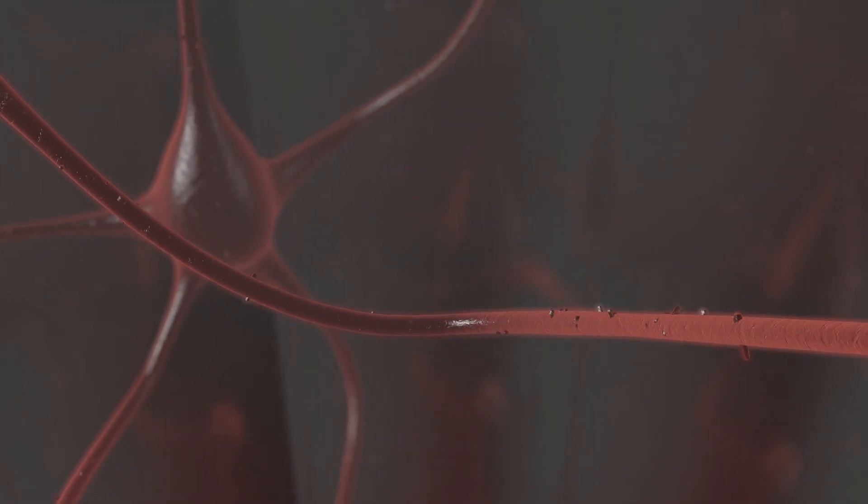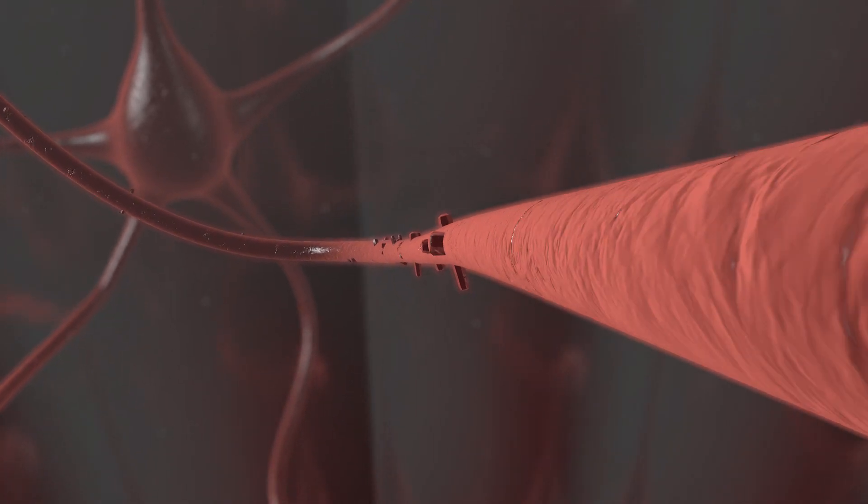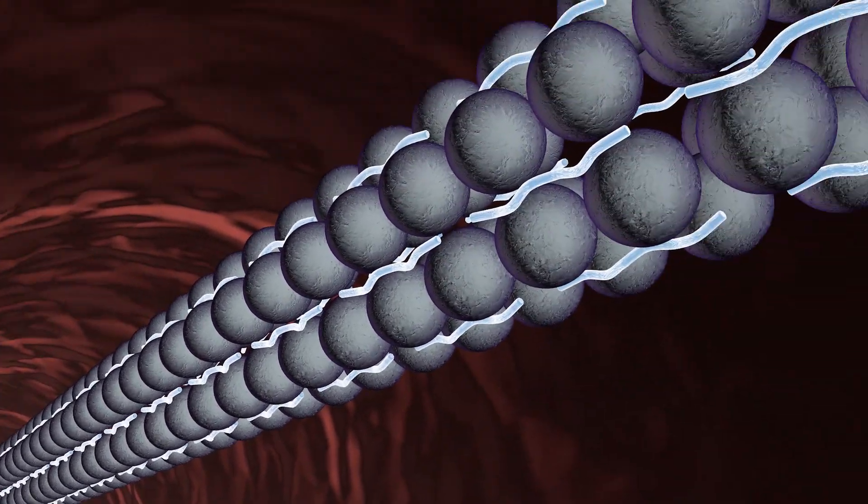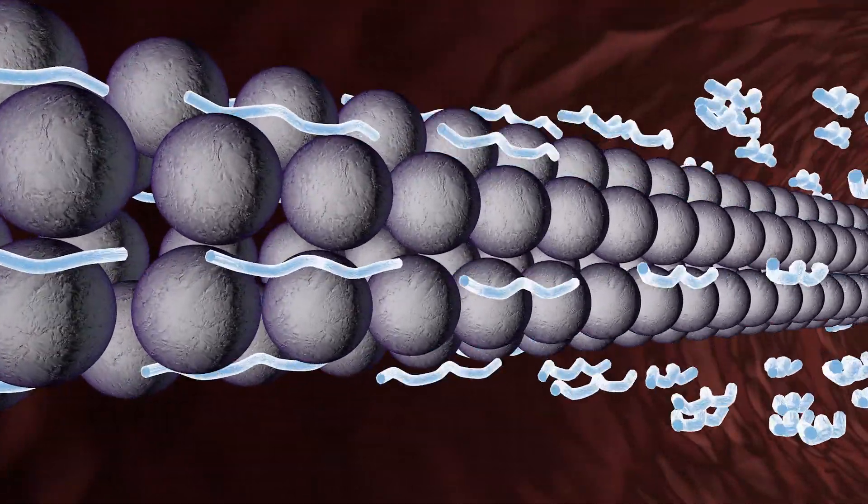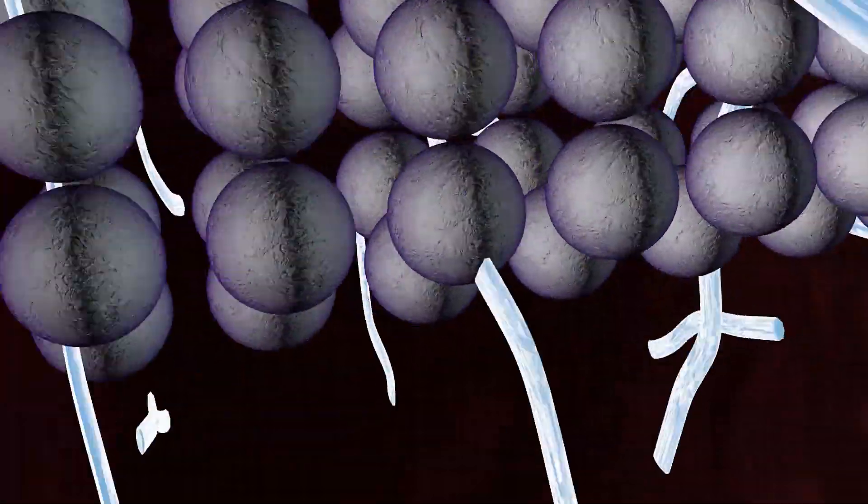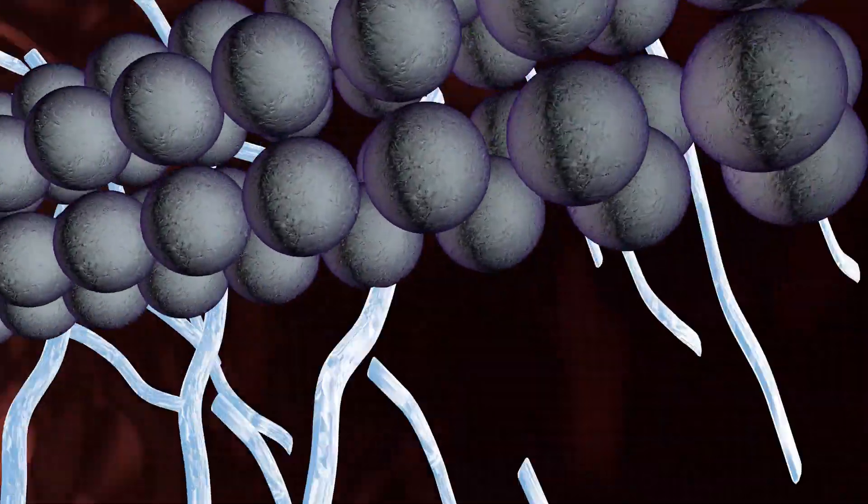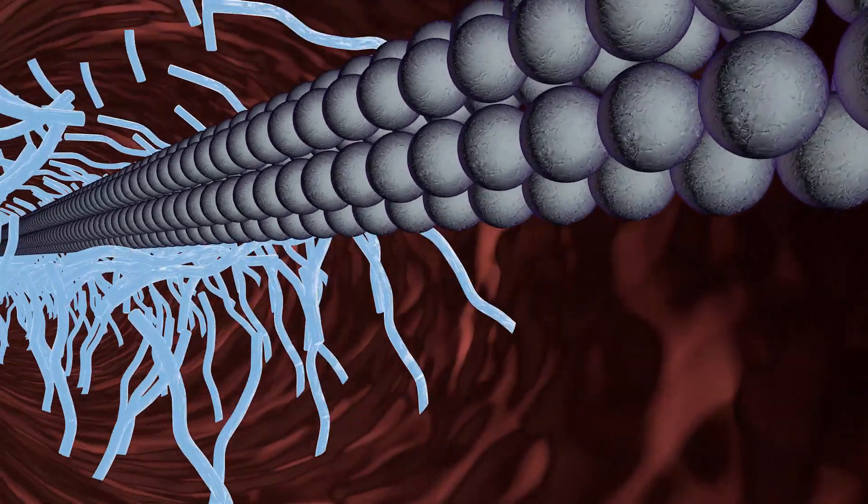The second hallmark is the accumulation of tau tangles. Tau helps to give the neuron its structure and holds the neuron's delivery system together. It seems that when beta-amyloid plaques accumulate, tau gets tangled up, forming this hallmark.